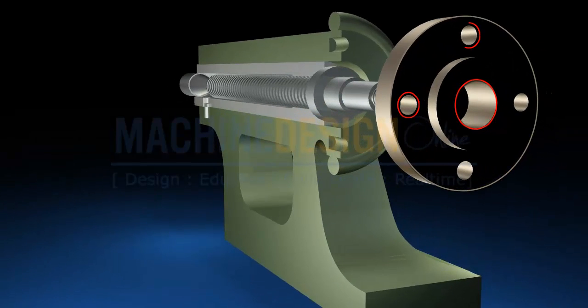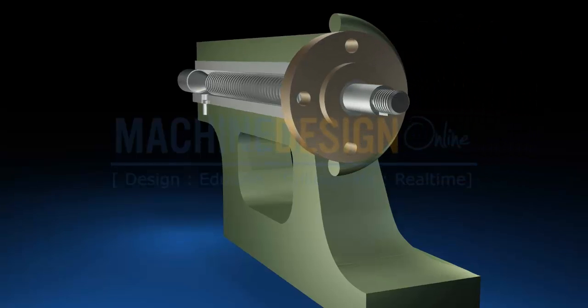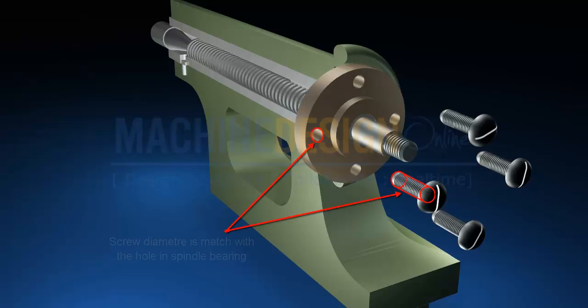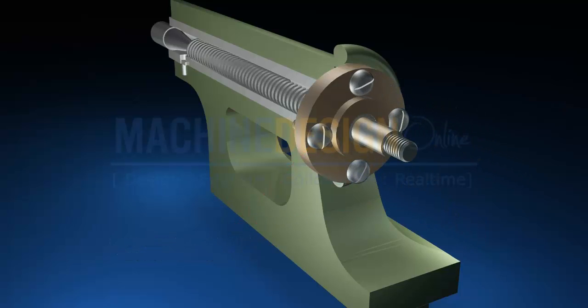Spindle bearing has four holes on 56 PCD of 8mm diameter which matches with screw diameter. Screws are used to fix the spindle bearing with body.